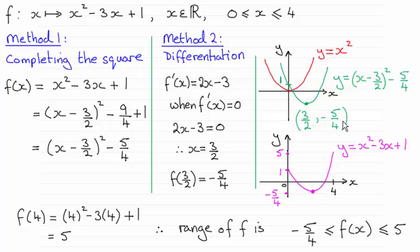Then if we restrict the domain to x is greater than or equal to 0 but less than or equal to 4, then we just remove this part of the graph that is to the left of the y-axis. So you get a graph looking like this.